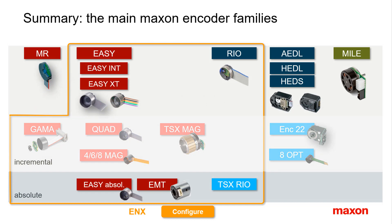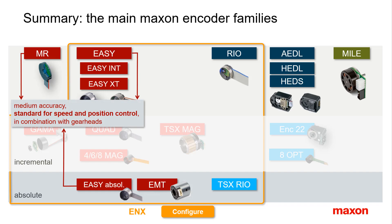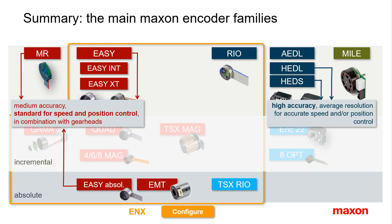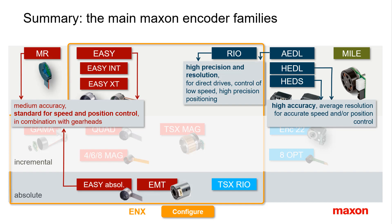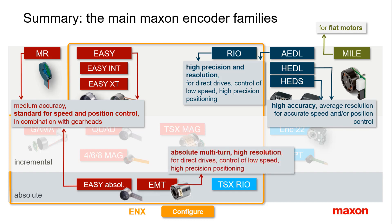A short summary focusing on the main incremental encoder families: The MR and EZ encoders are the first choice, found on many Maxon motors and fulfilling the feedback requirements of most applications, and are also perfectly suited for use with gearheads. On larger motors and for precise feedback, the HEDS and HEDL encoders might be best suited. The high-resolution RIO and ADL are primarily intended for high-precision direct drive applications. The MILE encoder is the standard feedback on flat motors. The EMT provides high-precision absolute multi-turn position feedback for positioning without the need of homing.